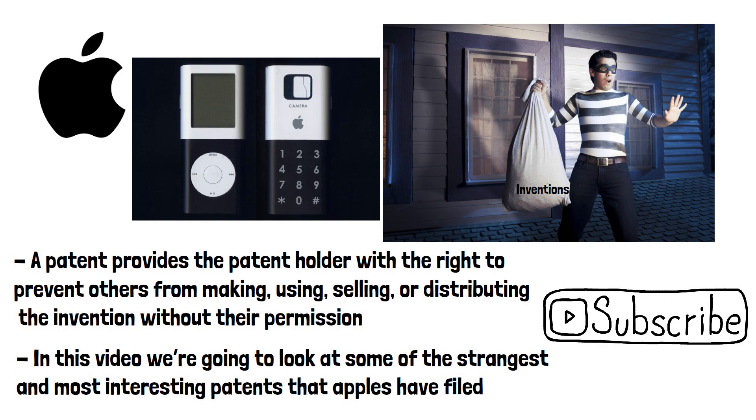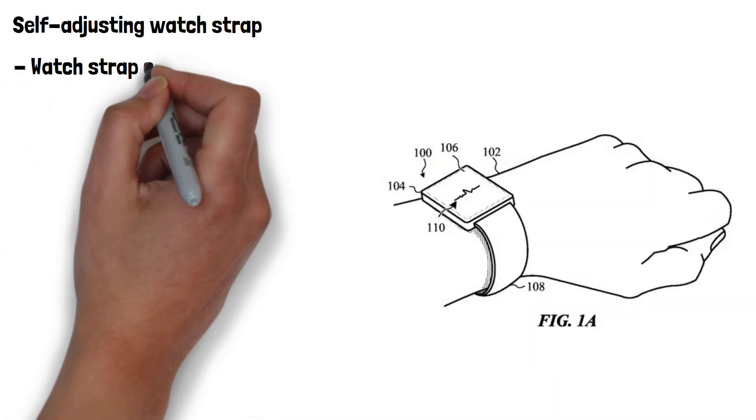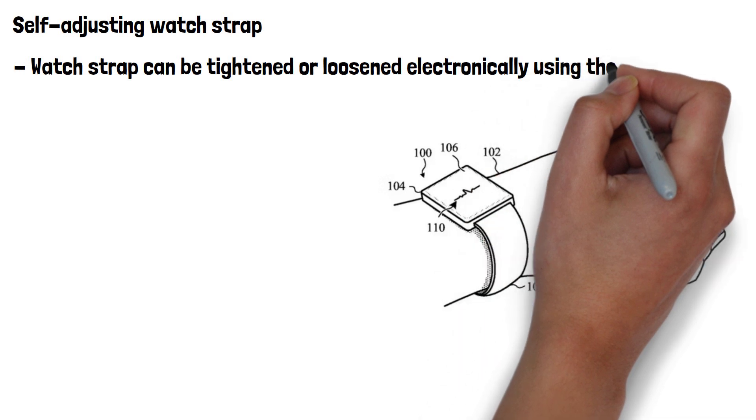The first one we're going to look at is the patent for the self-adjusting watch strap for the Apple Watch. The idea behind this one is that the watch strap can be tightened or loosened electronically using the watch itself.